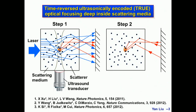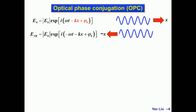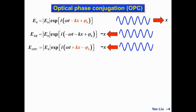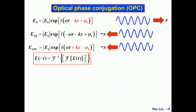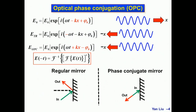In reality we cannot reverse the time, but we can do something called optical phase conjugation using a phase conjugate mirror to achieve the equivalent time reversal. A wave traveling from left to right, when time-reversed, travels from right to left. Phase conjugation by taking the conjugate of the phase gives a wave traveling from right to left — phase conjugation is equivalent to time reversal. A regular mirror reflects a beam in a different direction, while a phase conjugate mirror reflects the beam back to where it comes from, as if time has been reversed.